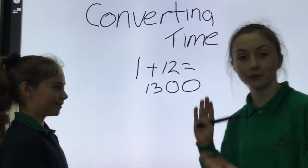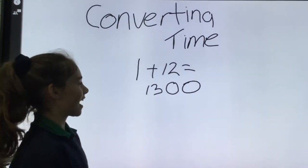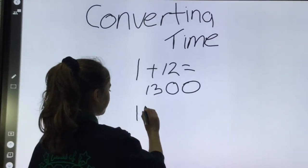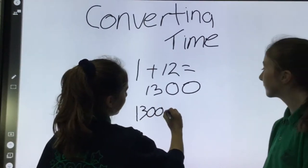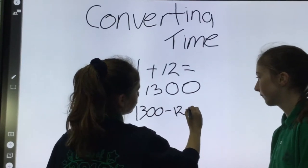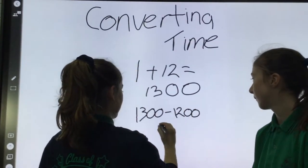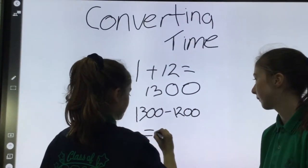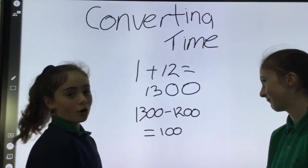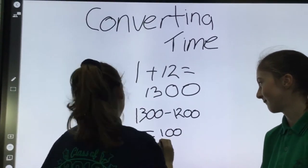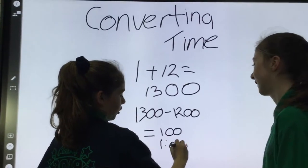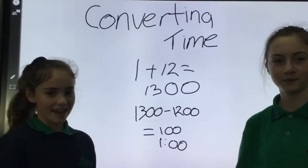Now Mia will convert it back. So for 1300, you take away 1200, and that will equal 100 — or if you want to, 1 o'clock.